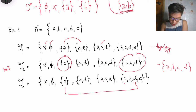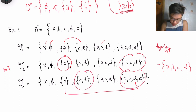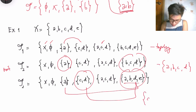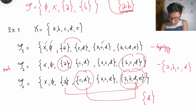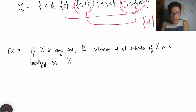For tau sub 3, taking a union gives a result that is present. However, if I take the intersection of two of the sets, I get the singleton {d}, and you don't see the singleton {d} in tau sub 3. This means tau sub 3 is not a topology.